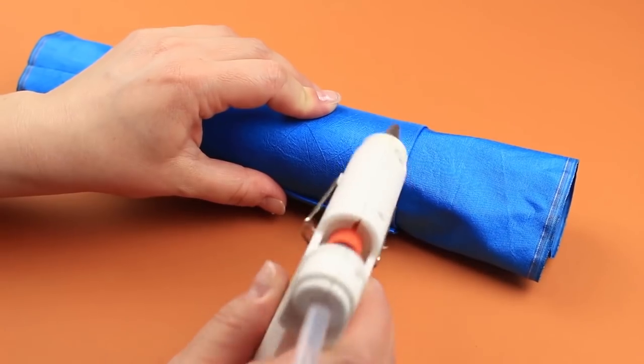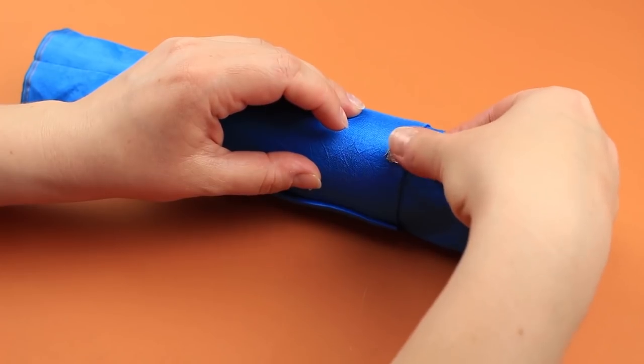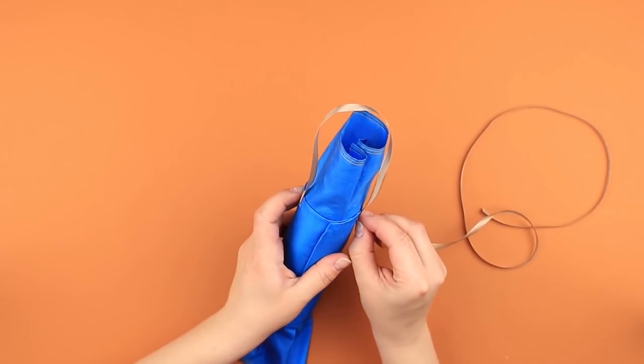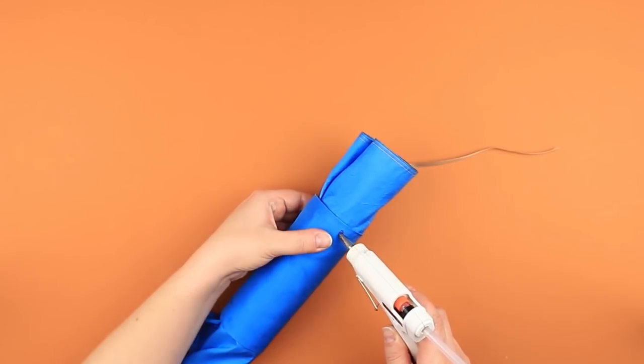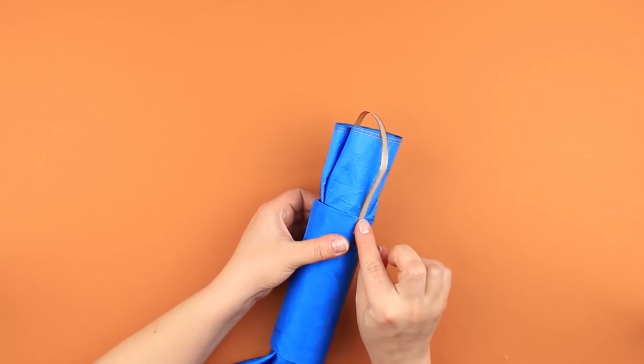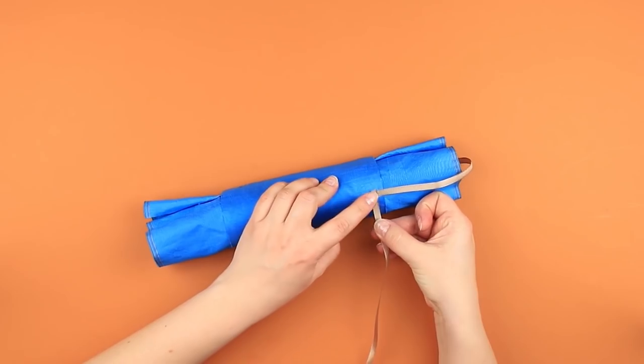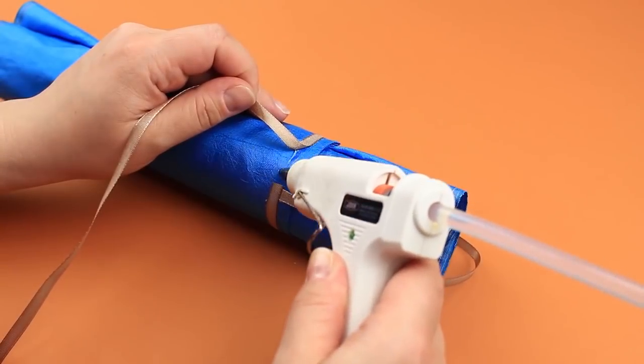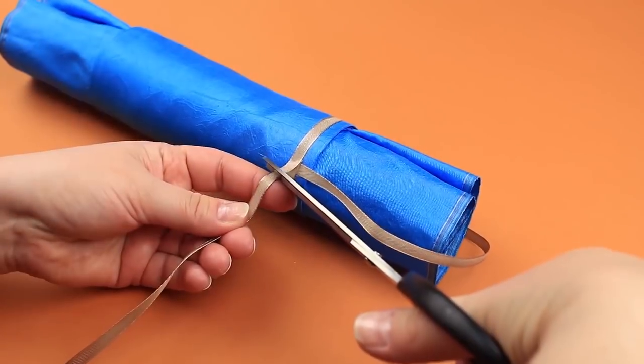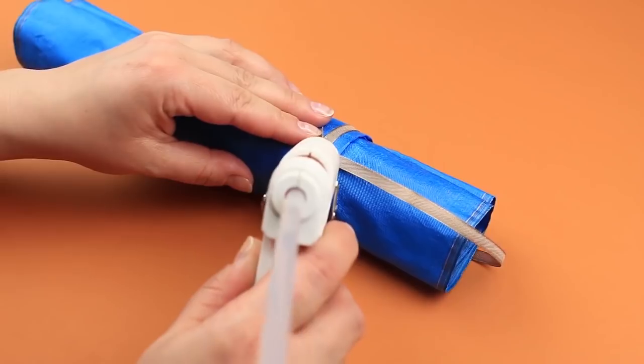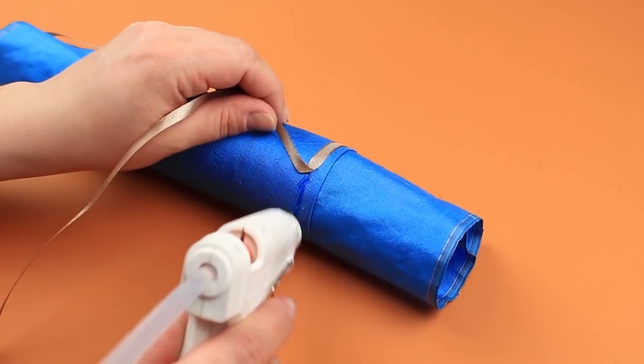Attach the ribbon handle to hang the holder. Mark the needed length. Cut off the excess. Hot glue the other side of the handle. Conceal the attachment place by sticking the ribbon around the holder. Cut off the excess. Glue the end. Attach the ribbon around the bottom of the holder.